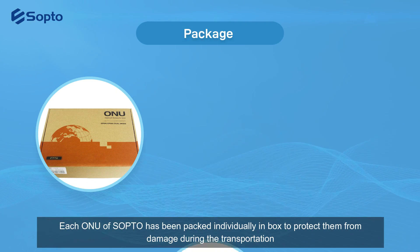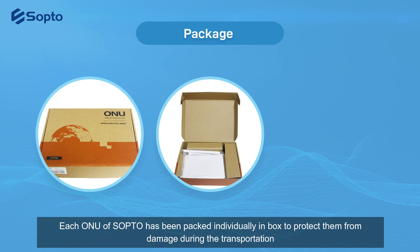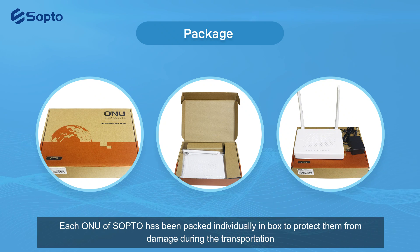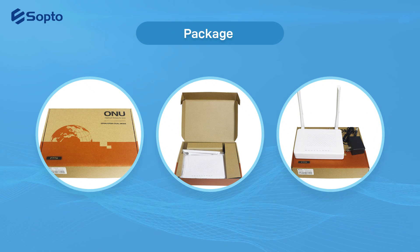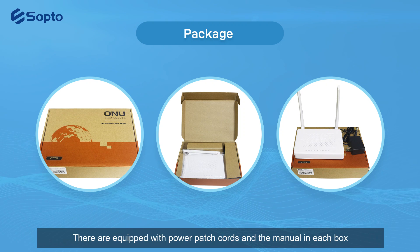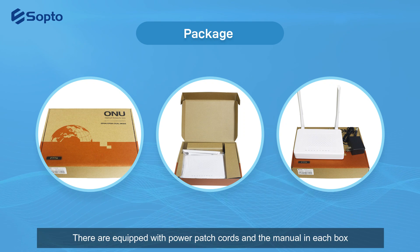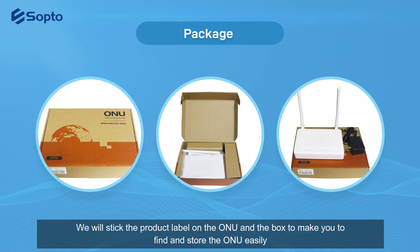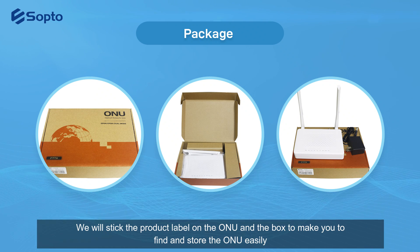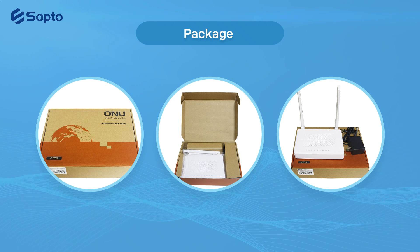Each ONU from Sopto has been packed individually in a box to protect it from damage during transportation. They are equipped with power patch cords and a manual in each box. A product label is affixed on both the ONU and the box to make it easy to find and store the ONU.